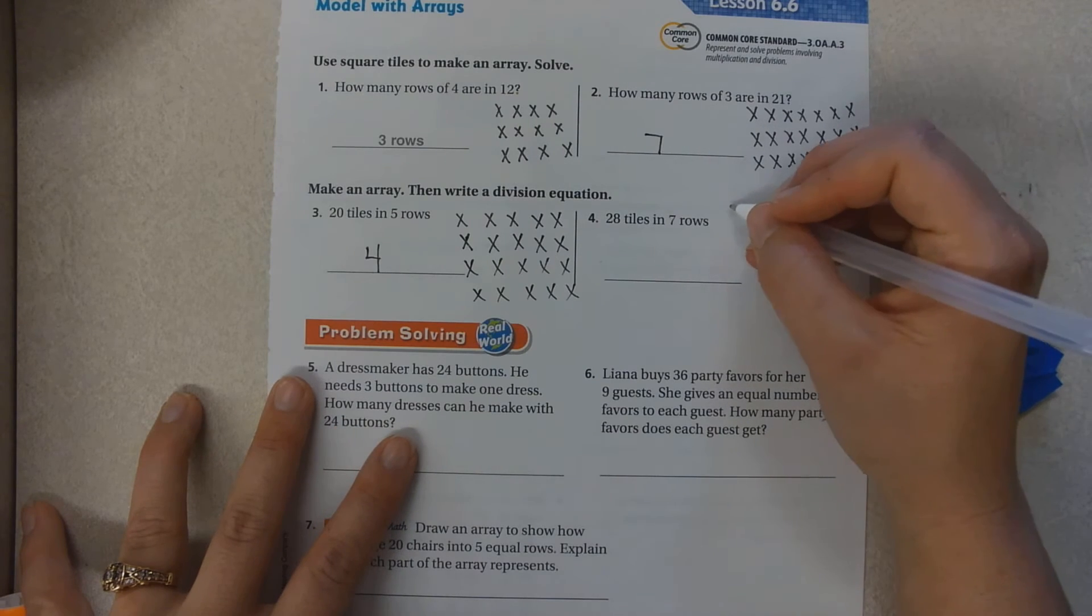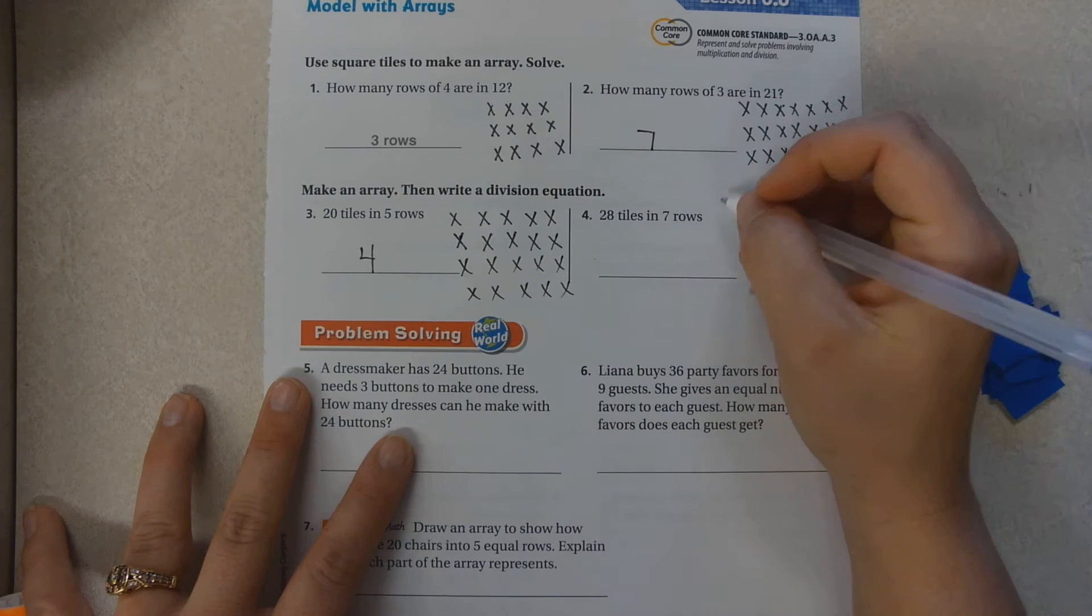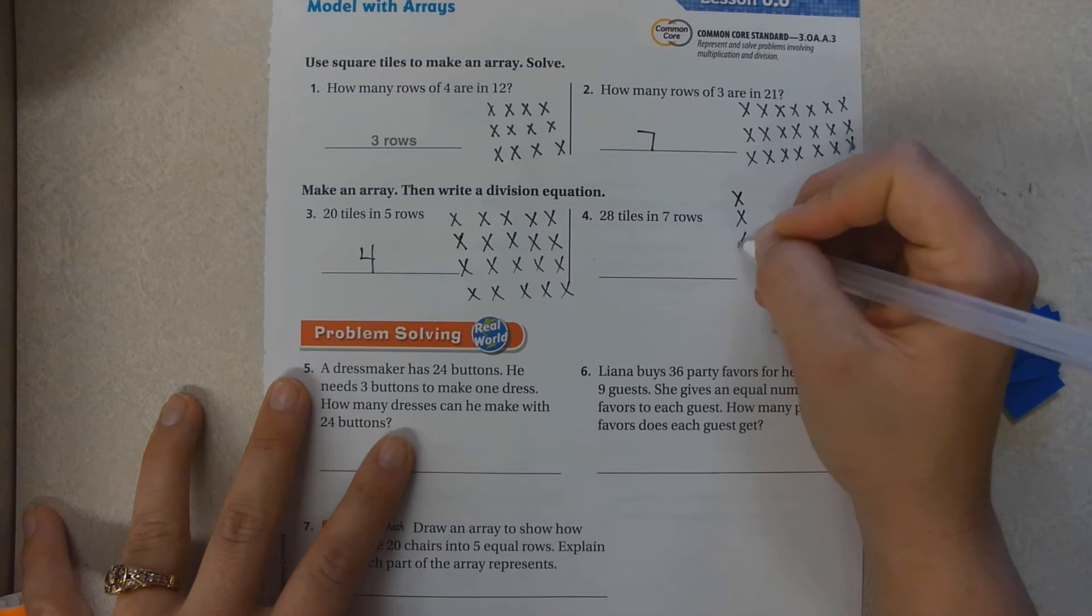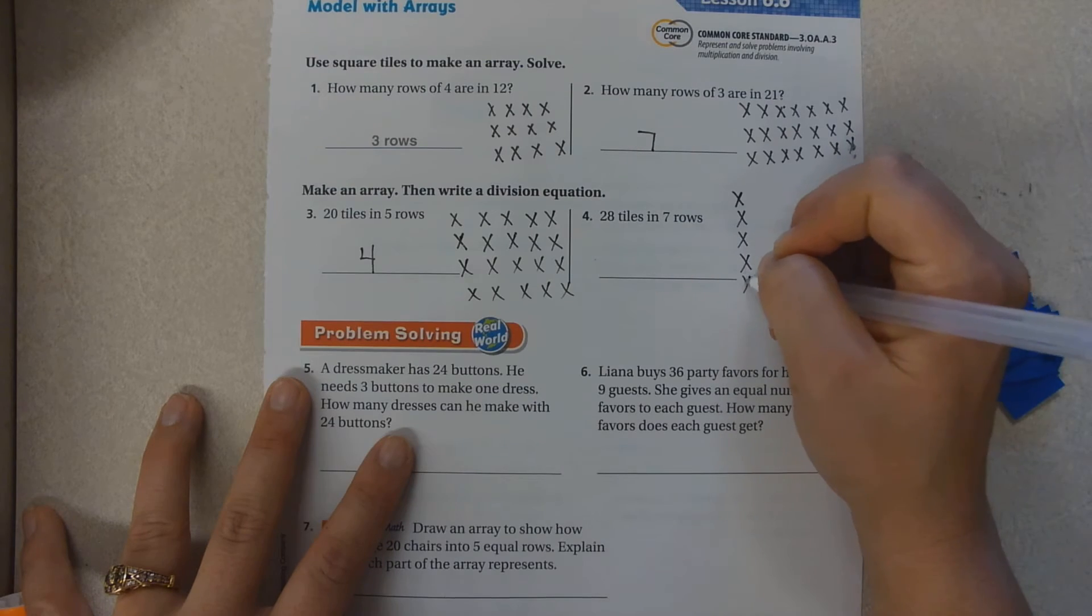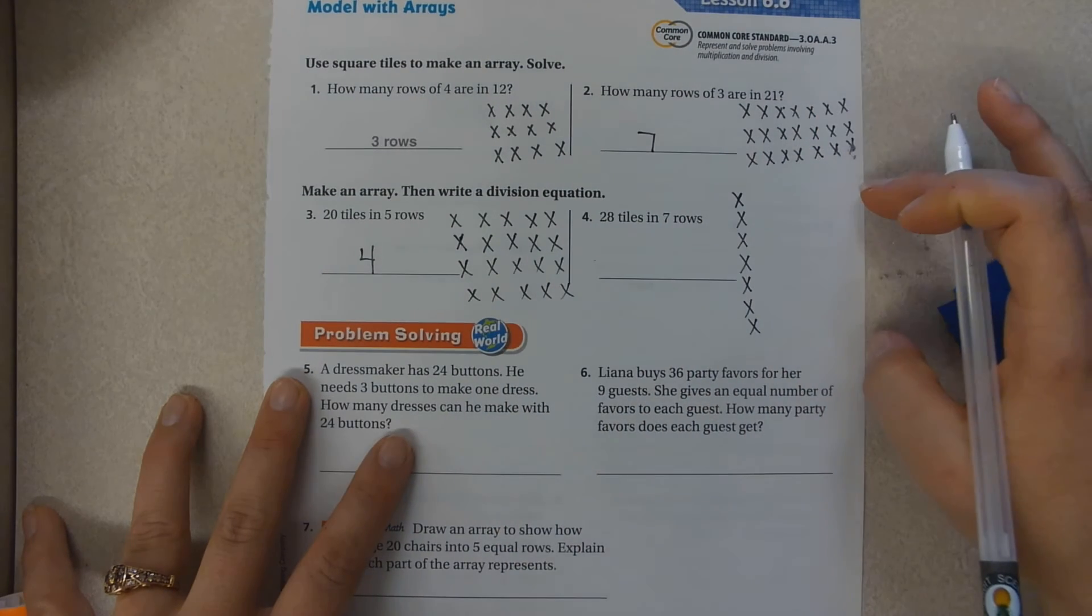Now for groups of seven, I can go seven this way or seven this way, it does not matter. Say I want to do it this way: one, two, three, four, five, six, seven. So then horizontally I'm going to continue counting.